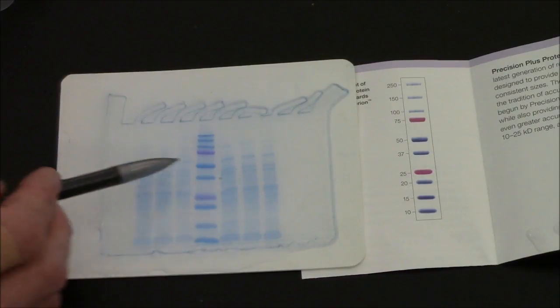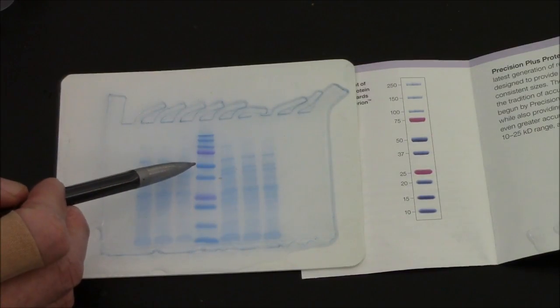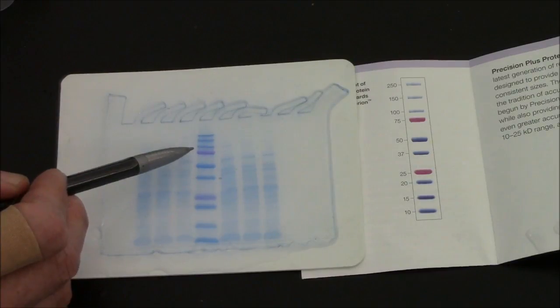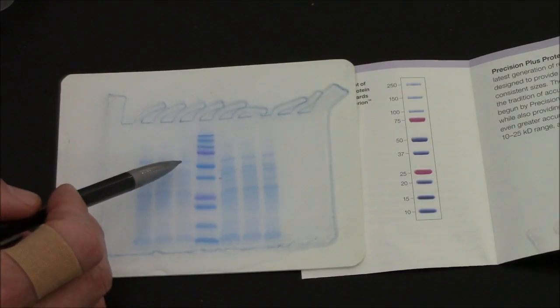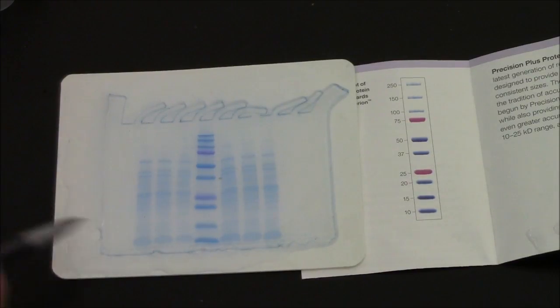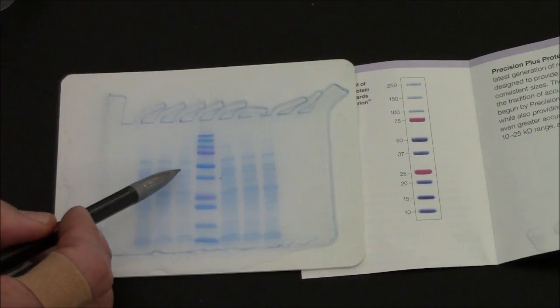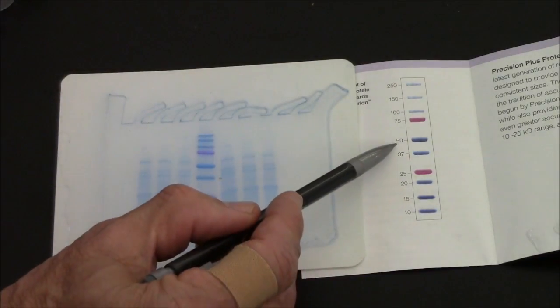This band here is between the 50 and the 75 kilodaltons. So it's probably something like 55 KD. 55,000 is its molecular weight. These two bands on the other hand are between 37 and 50.